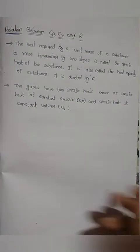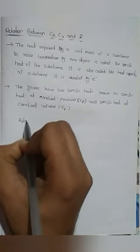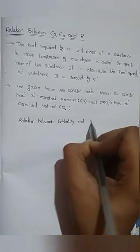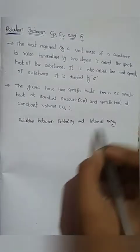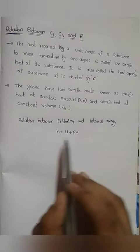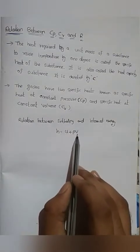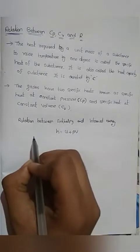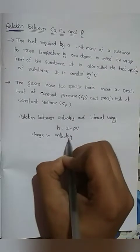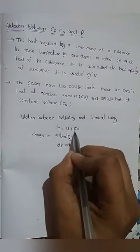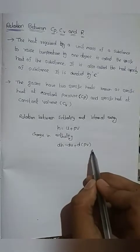We would like to know about the relationship between enthalpy and internal energy. Enthalpy H is defined as the sum of internal energy and the product of pressure and volume: H = U + PV. So the change in enthalpy is dH = dU + d(PV). This is equation number 1.